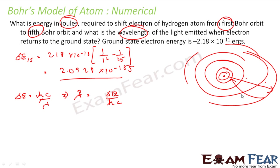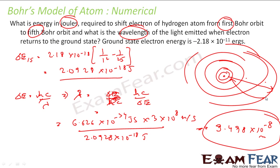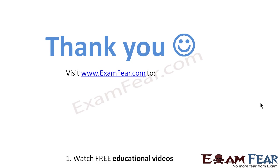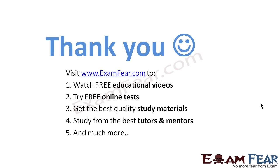The same energy is released when the electron jumps back from 5 to 1. Lambda equals hc by delta E. h is 6.626 into 10 to the power minus 34 joules per second, c is 3 into 10 to the power 8 meters per second, and delta E is 2.0928 into 10 to the power minus 18 joules. Solving this, you get lambda as 9.498 into 10 to the power minus 8 meters — this is the wavelength of the light emitted. Thank you, visit examfear.com to watch free educational videos, try free online tests, get the best quality study materials, and study from the best tutors and mentors.